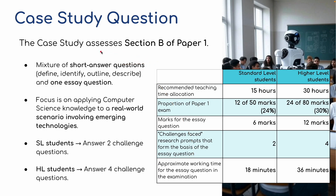The case study assesses section B of paper one. It's a mixture of short answer questions — define, identify, outline and describe — and one essay-style question. It focuses on applying computer science knowledge to a real-world problem, with scenarios involving emerging technologies. Standard level students answer two challenge questions and higher level students answer four challenge questions. That's 12 out of 50 marks, which is 24% of the paper for standard level, and 24 out of 80 marks for higher level students.